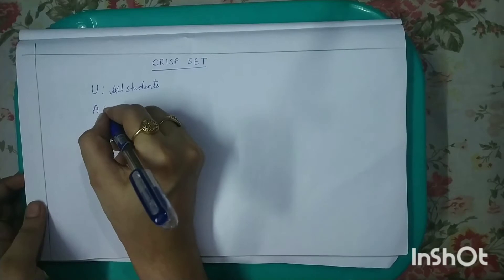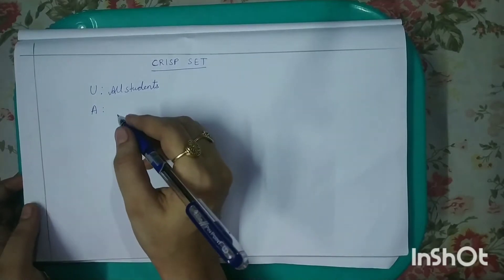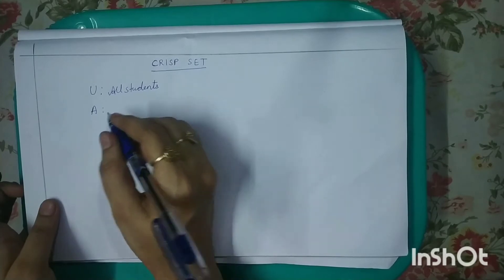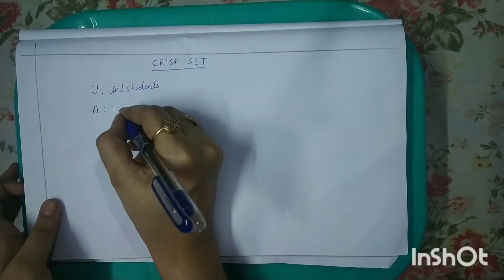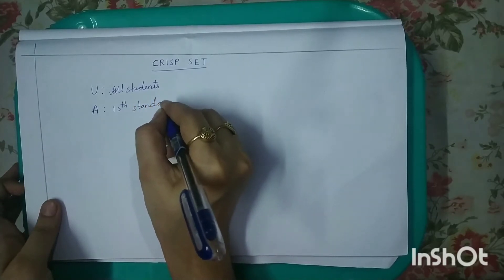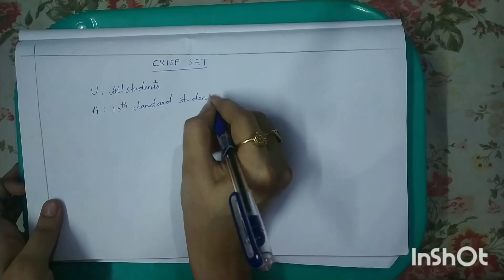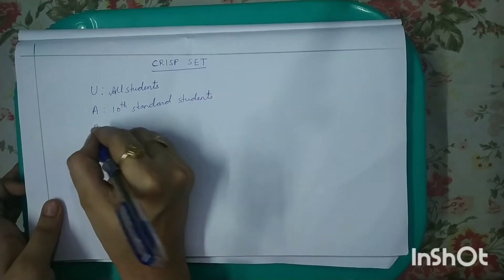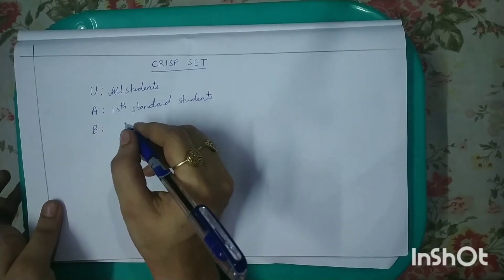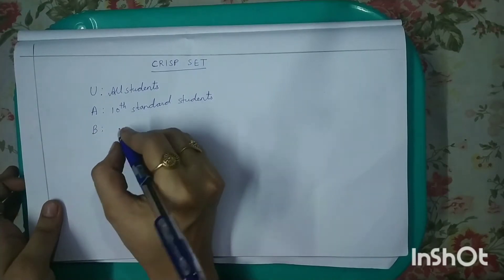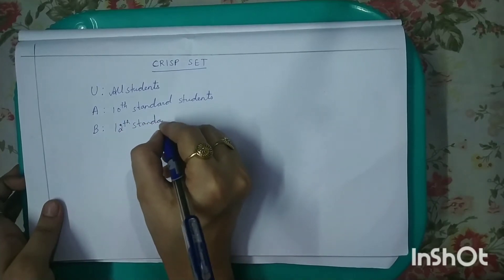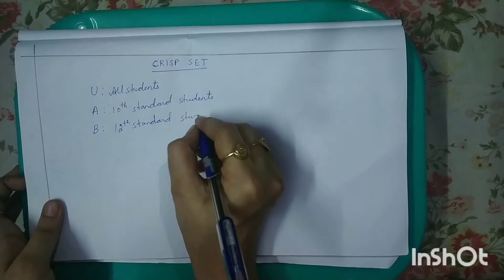Next, it is set A. Let us put all the 10th standard students studying in Good Shepherd School in set A — so 10th standard students. Next, it is set B. Let us put all the 12th standard students studying in Good Shepherd School in set B — so 12th standard students.